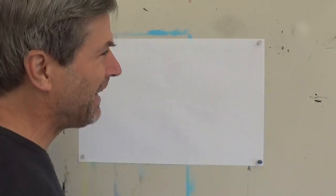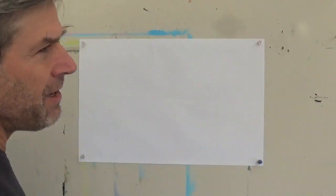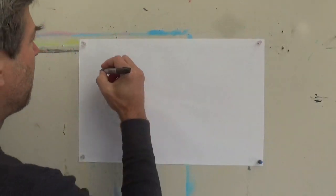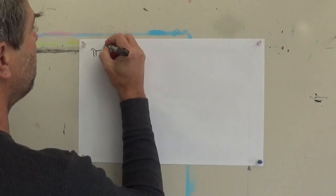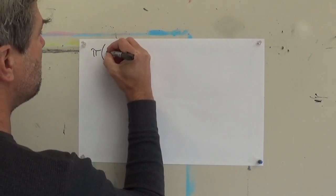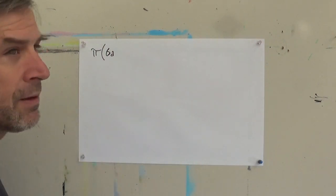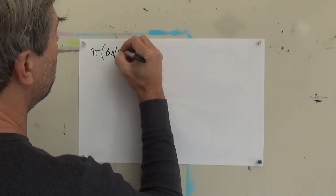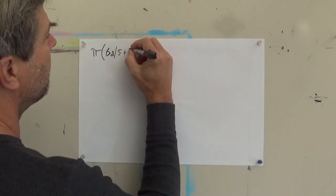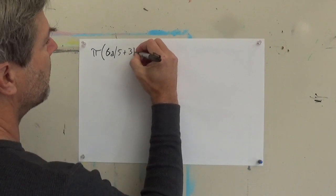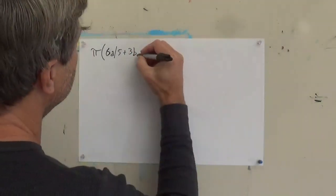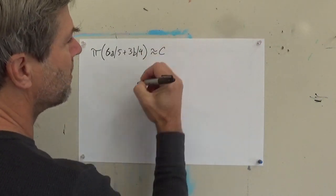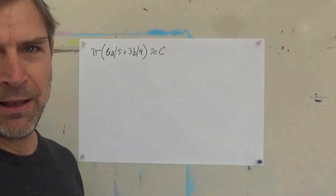They keep my mind agile. He worked out an equation that I think it was pi times 6 times the semi-major axis divided by 5 plus 3 times the minor axis over 4 gives you roughly the circumference of an ellipse.